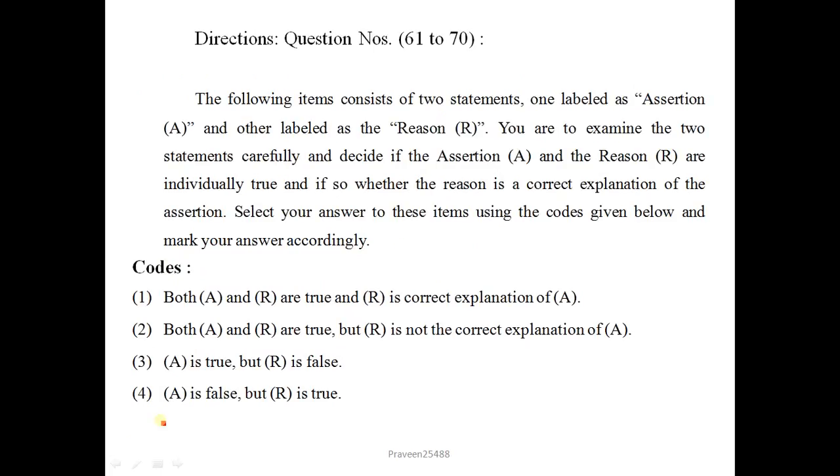Directions for question number 61 to 70. The following items consist of two statements, one labeled as assertion and other labeled as the reason R. You are to examine the two statements carefully and decide if the assertion and the reason are individually true and if so whether the reason is the correct explanation of the assertion. Select your answer using the codes given below. Code 1: both A and R are true and R is correct explanation of A. Code 2: both A and R are true but R is not the correct explanation of A. Mark 3 if A is true but R is false. And mark 4 if A is false but R is true.